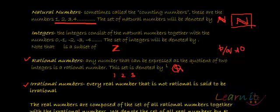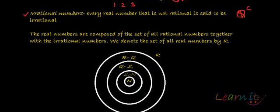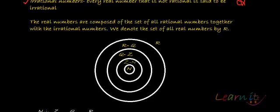Real numbers are composed of the set of all rational numbers together with irrational numbers. The irrational number set is said to be the complement of the rational numbers. In summary, natural numbers N are contained in integers Z, which are contained in rational numbers Q, which are contained in real numbers R. These concentric circles illustrate this: N is the innermost, then Z, then Q, and R is the largest circle. Taking Q out of R gives you the remaining irrational part.